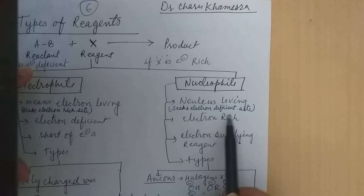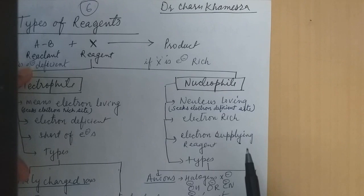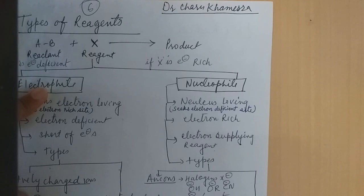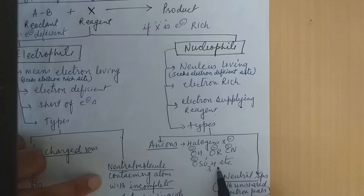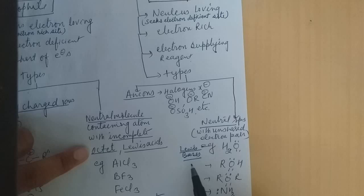Nucleophile is a nucleus loving species. They seek the electron deficient side because they are electron rich — they are electron supplying reagents. These may be anionic or neutral. All anions, like anionic halogens, OH⁻ — they all have species or atoms which have lone pair electrons for donation. They are anionic nucleophiles.